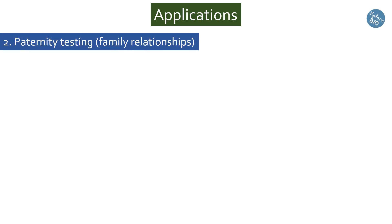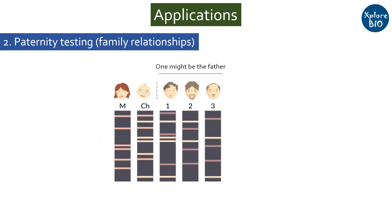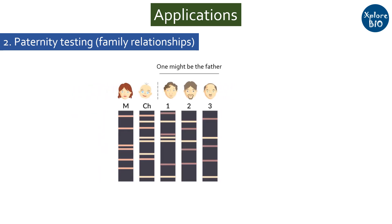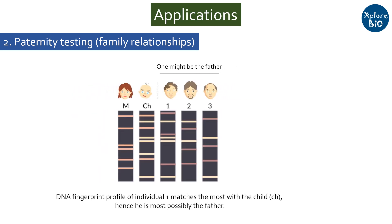DNA Fingerprinting is also used to find out paternity and other family relationships among individuals. By analyzing the DNA of a child and a potential parent or sibling, it is possible to determine who the real father is among the potential individuals tested, with a high degree of accuracy.